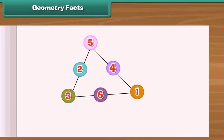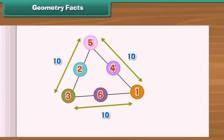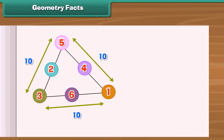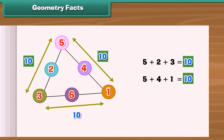Geometry facts. Look at this magic triangle. The sum of numbers on each side of the triangle is 10. Let us verify: 5 plus 2 plus 3 is equal to 10. 5 plus 4 plus 1 is equal to 10. 3 plus 6 plus 1 is equal to 10.